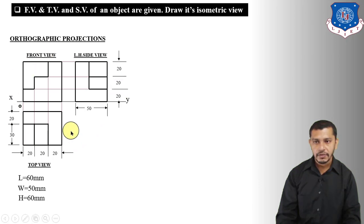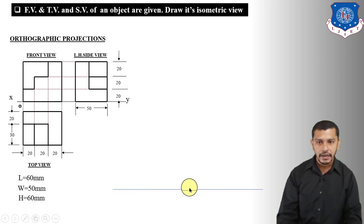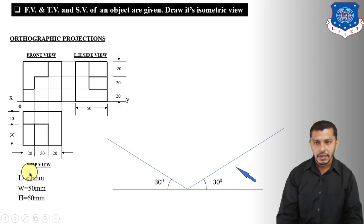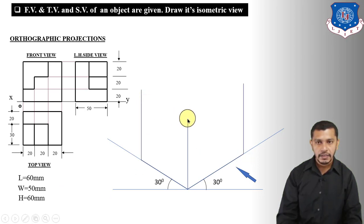To draw the isometric view of this object, we first need to draw a cuboid with length 60, width 50, and height 60. Start by drawing the isometric axis — the baseline with lines at 30 degrees on both sides. On one axis we mark the length, on the other the width. Mark the length as 60mm, width as 50mm, and height as 60mm. From these base points, draw lines parallel upward to show the height.